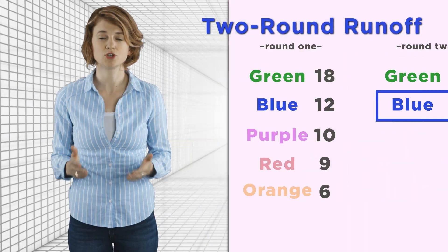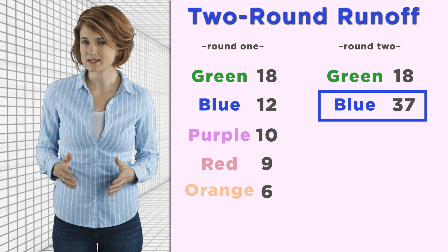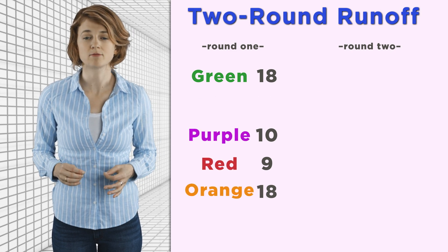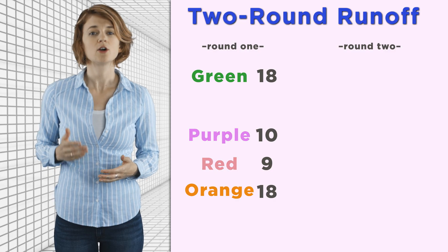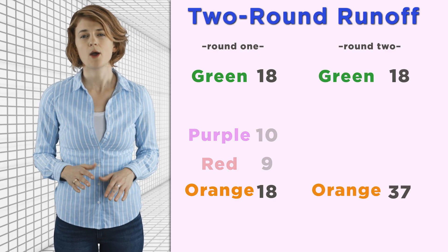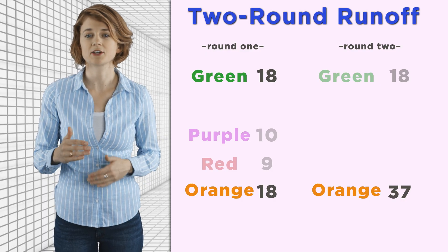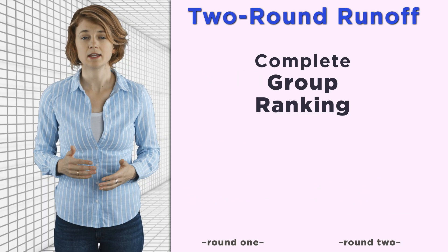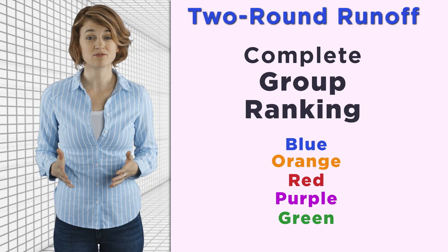Let's see how this works in the two-round runoff system. Blue won, and green appears to be in second. But if we kick out blue and repeat the two-round runoff procedure on the re-ranked ballots, green and orange go to the second round—but orange wins overall. Repeating this, the complete group ranking is blue, orange, red, purple, green. Green is actually ranked last. Clearly, it's important which voting system we use to count ballots—the result depends on the system.